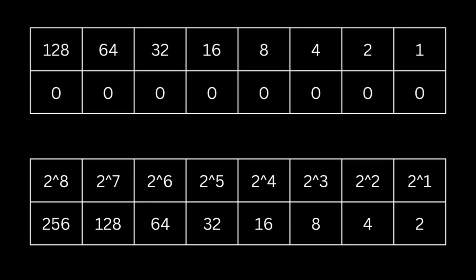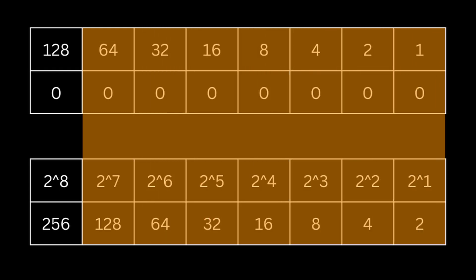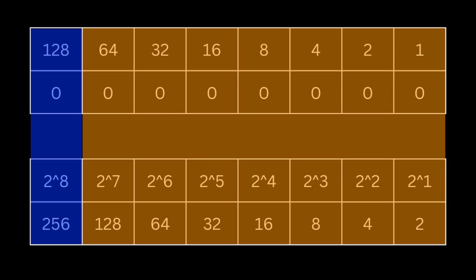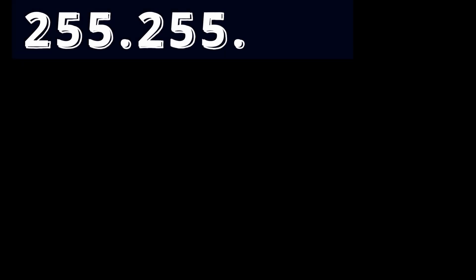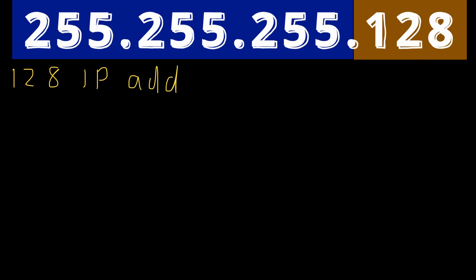Two to the seventh power is 128, so we keep bits 2 through 8 as host bits in the fourth octet. The first bit of the fourth octet we switch to the network portion, changing zero to one. That bit has a binary value of 128. Our subnet mask is now 255.255.255.128, allowing for 128 IP addresses in the subnet.